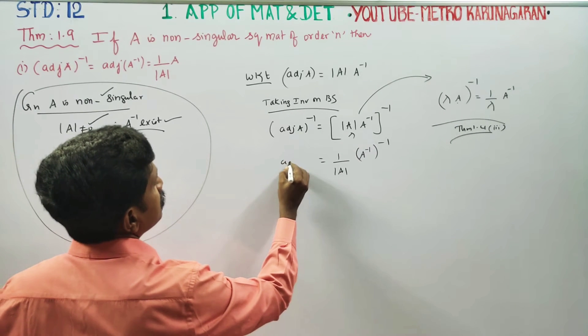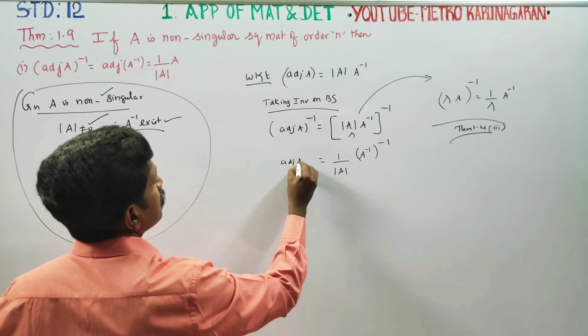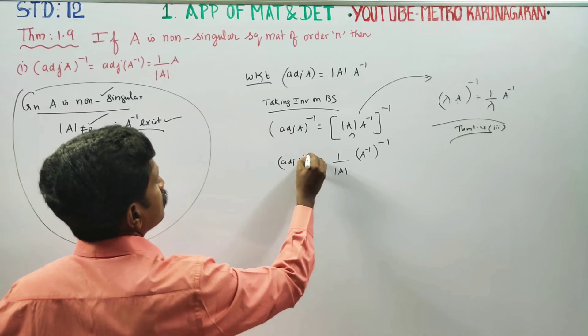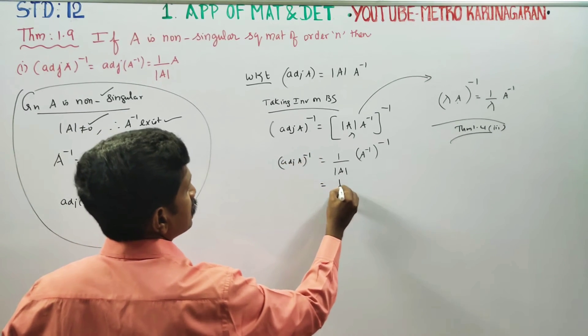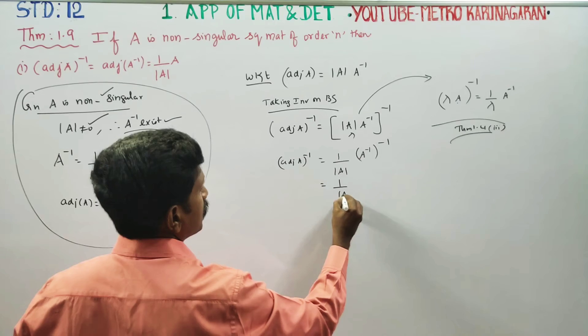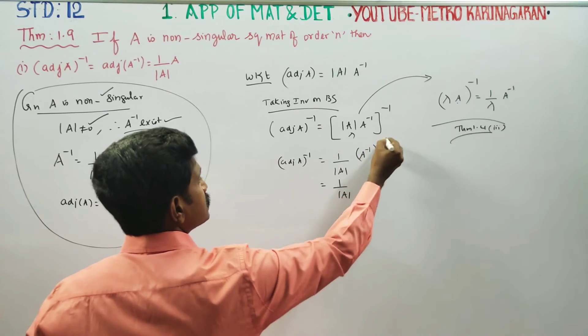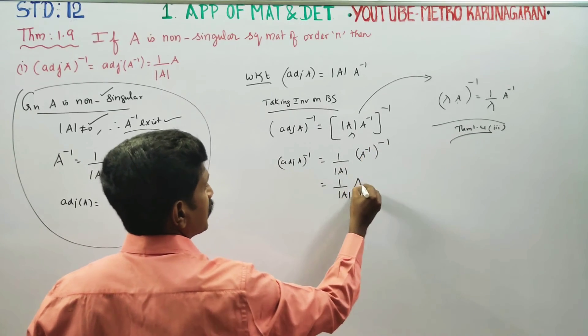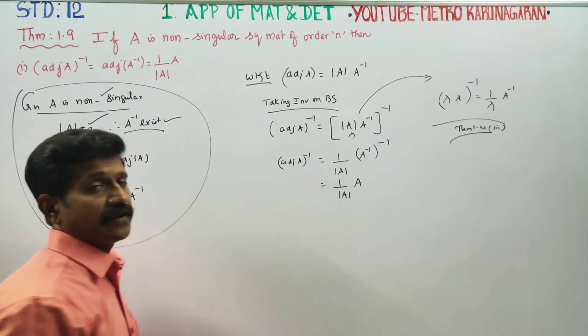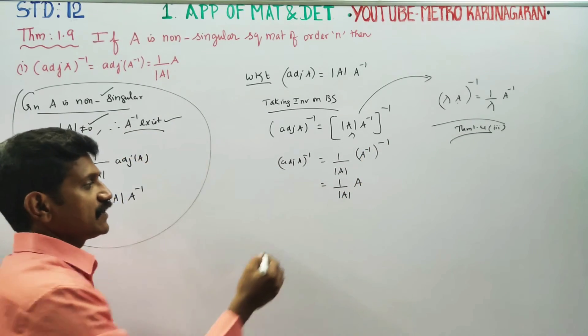Adjoint A whole inverse is equal to 1 by determinant A, into A inverse inverse.